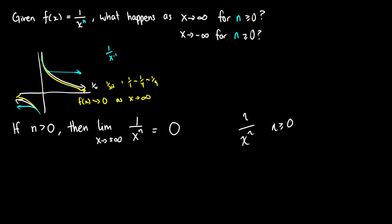This is a really good idea to have memorized. Another way to think about it: 1 is a constant — it's never going to change — but x^n is going to get bigger and bigger. So as this ratio grows, it's like saying 1/2, 1/3, 1/5, 1/7 — the bottom gets bigger and bigger. Eventually we'll have something like 1/21,965, which is very, very close to 0. As we keep going, the denominator gets bigger and bigger, so this ratio is basically so small it might as well be 0.